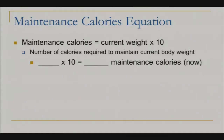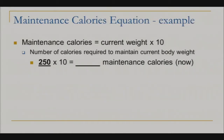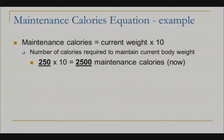In the first blank, fill in your current weight. You multiply that by 10 to get your maintenance calories. You don't need a calculator — just add a zero on the end of your weight. So if you are 250 pounds, multiply that by 10, and 2,500 calories would be your maintenance calories.